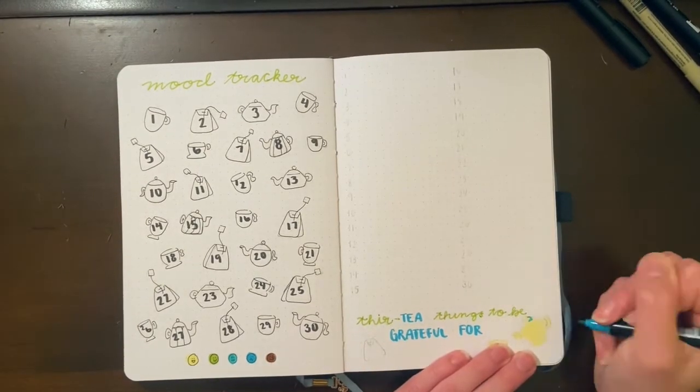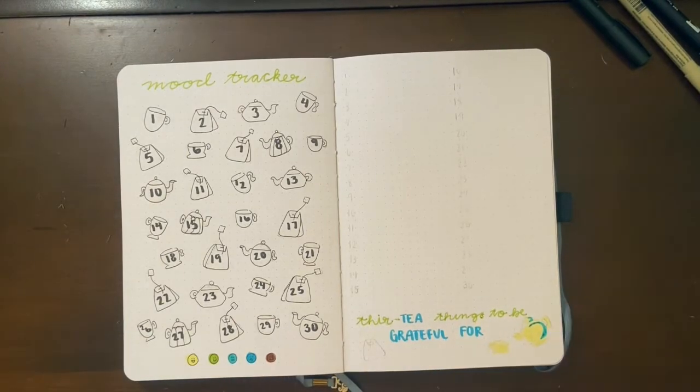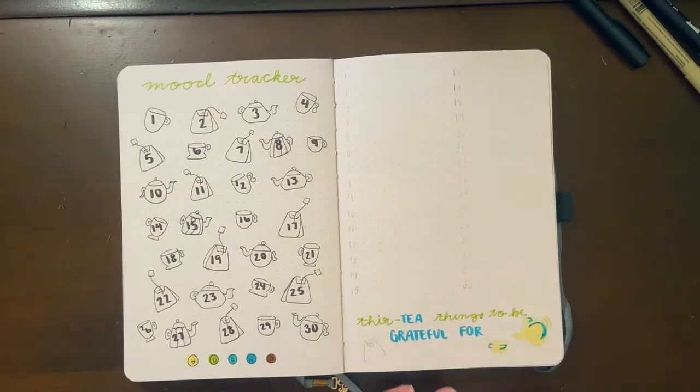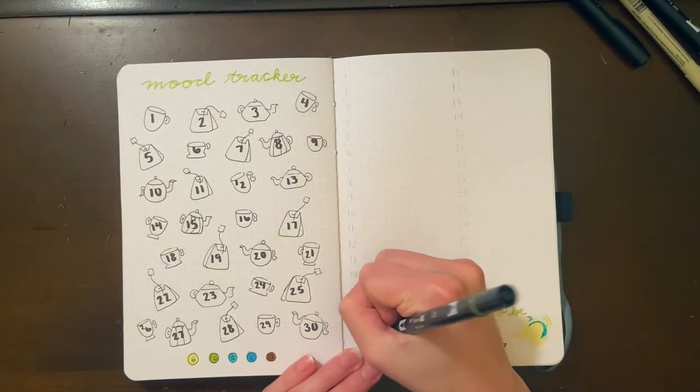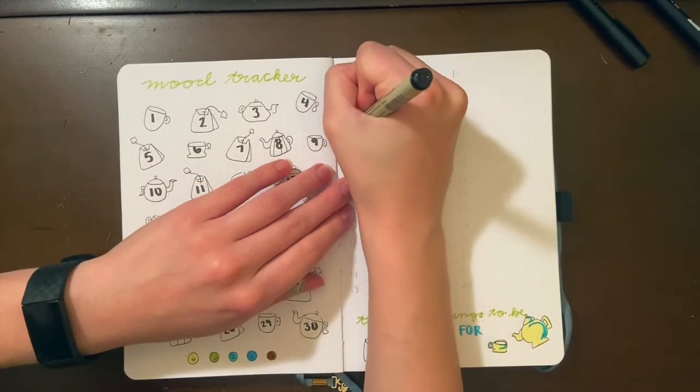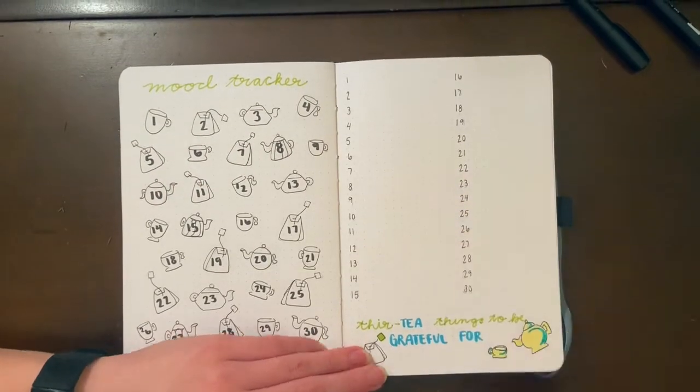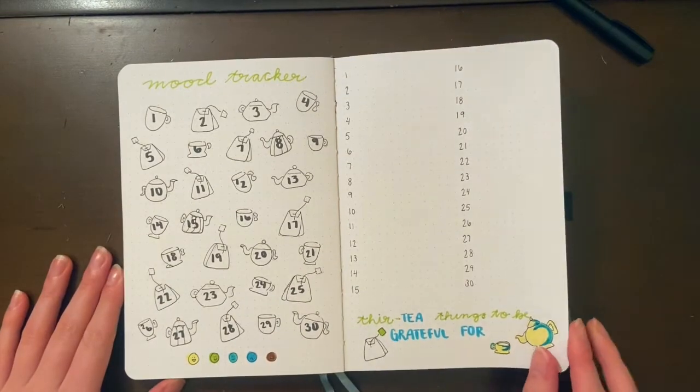For the kettle and the mug, I used the same kind of bold teal shadows that I did on my cover page. And here are those spreads finished.